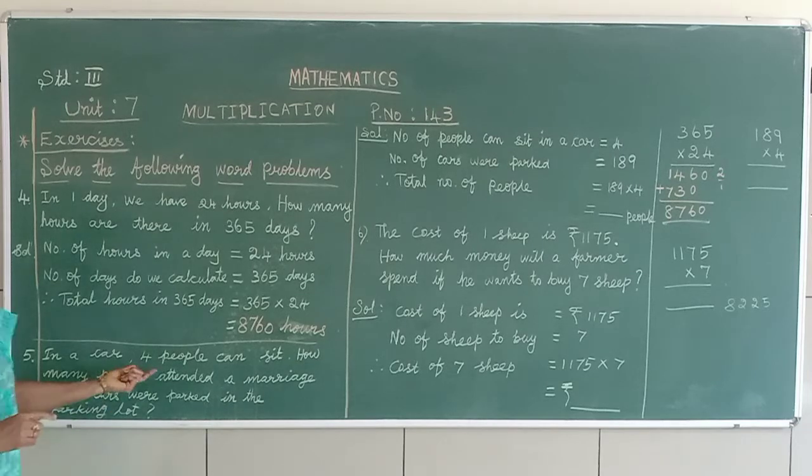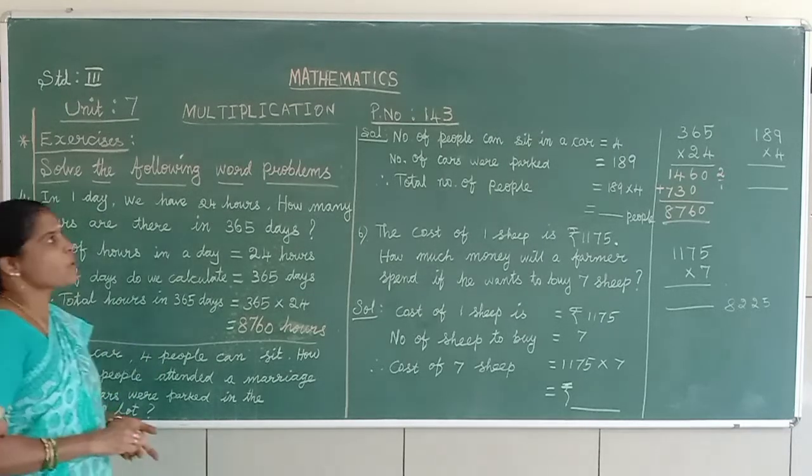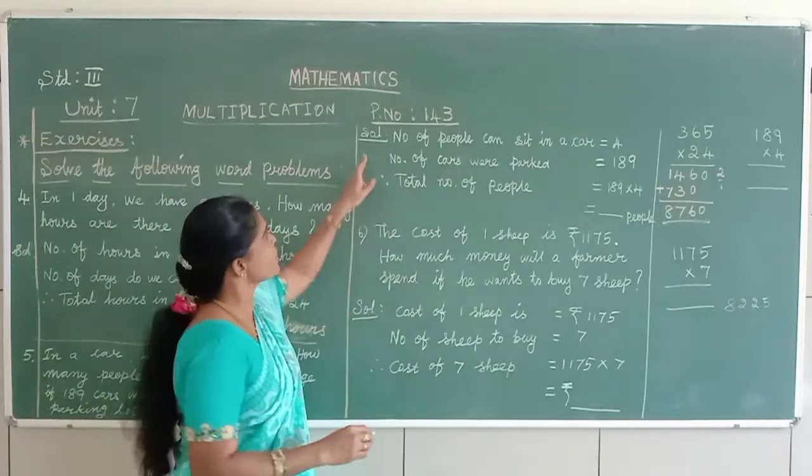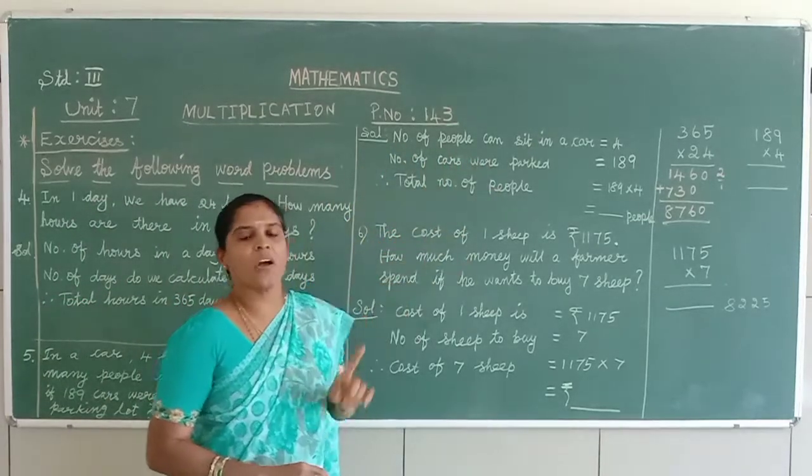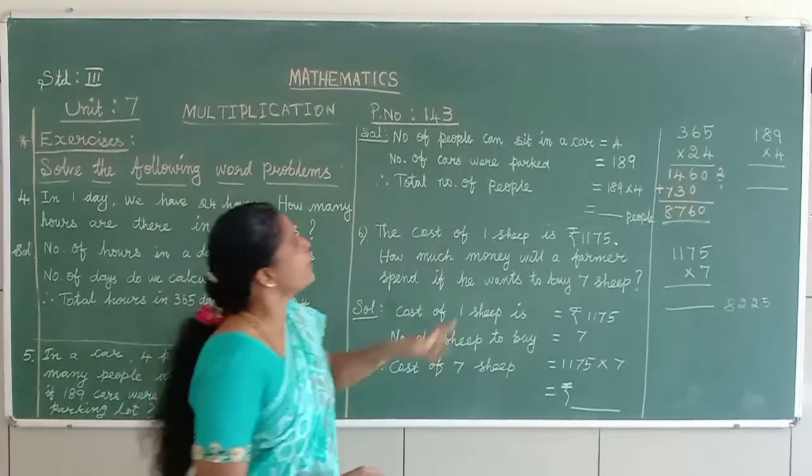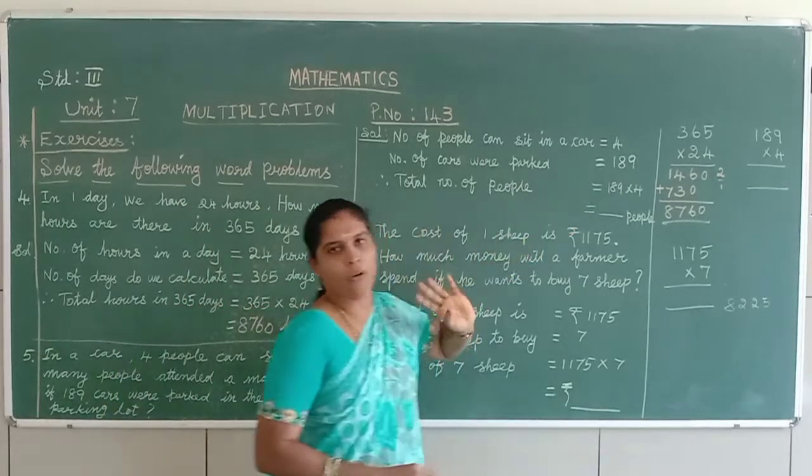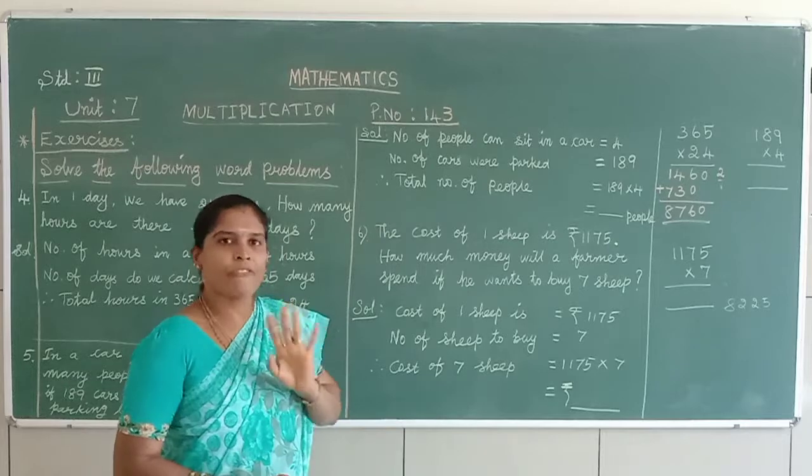In the car, how many people they can sit? 4. So, we have to make a step in the solution bar. Number of people can sit in a car. In a car means in one car. Number of people, how many? 4. So, you have to make it in the first step.